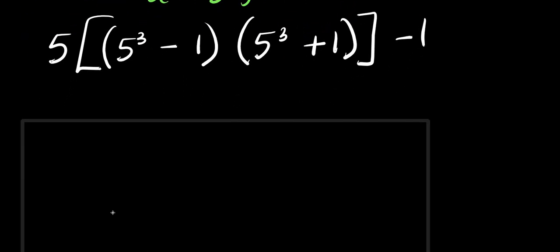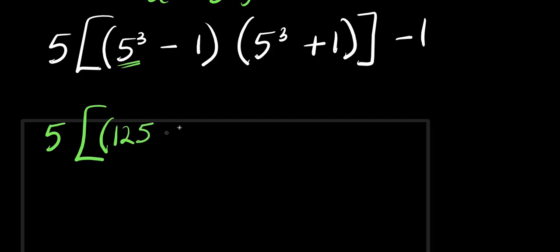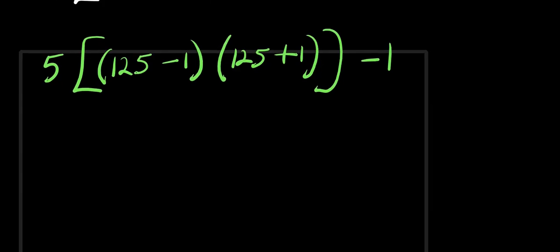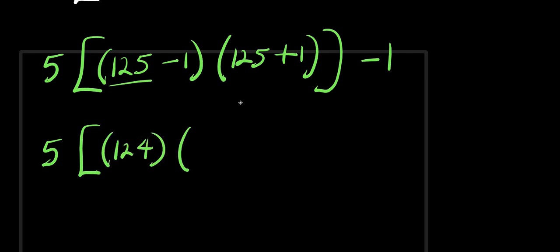From here, remember 5 power 3 is 5 times 5 times 5, that's 125. So I have 5 times 125 minus 1, times 125 plus 1, minus 1. From here I have 5 times 124 times 126, minus 1.